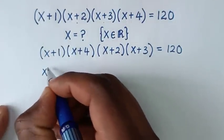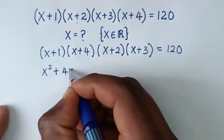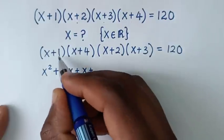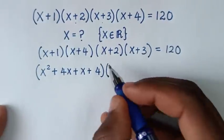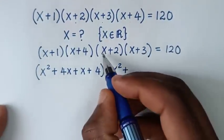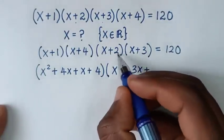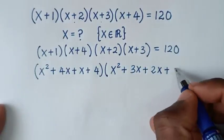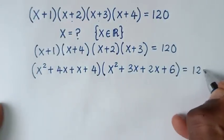x times x gives x squared, plus x times 4 is 4x, plus 1 times x is x, plus 1 times 4 is 4. Then times: x times x is x squared, plus x times 3 is 3x, plus 2 times x is 2x, plus 2 times 3 is 6, equals 120.